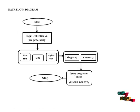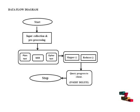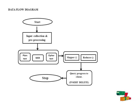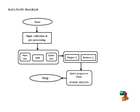Let's see the data flow diagram. The process starts with input collection and preprocessing. The plain text is then converted using the MD5 algorithm to produce ciphertext. It then goes to the mapper and reducer stage, followed by query processing using insert and delete functions.